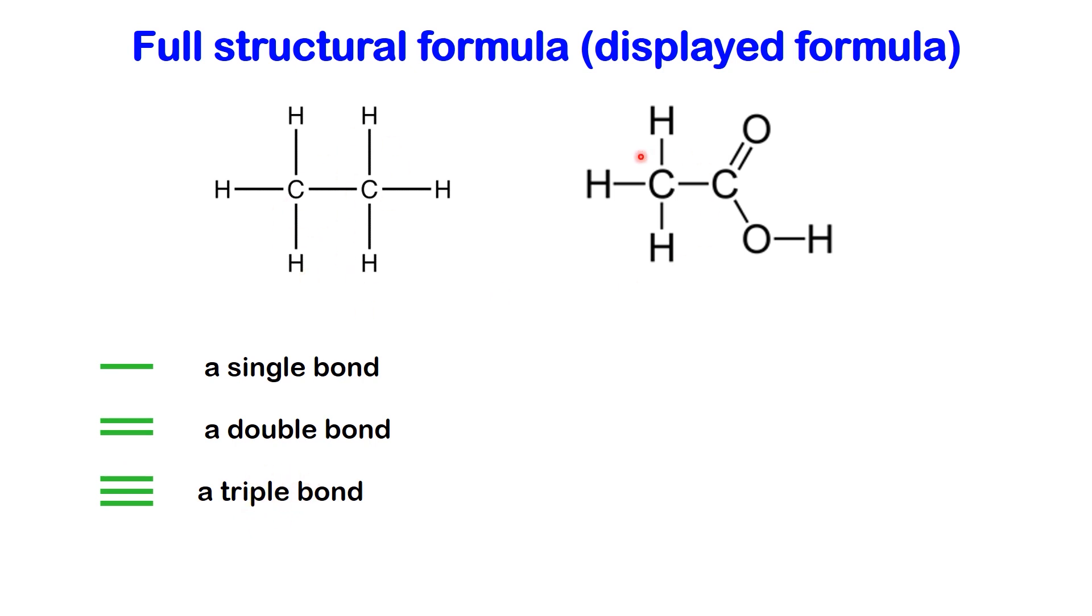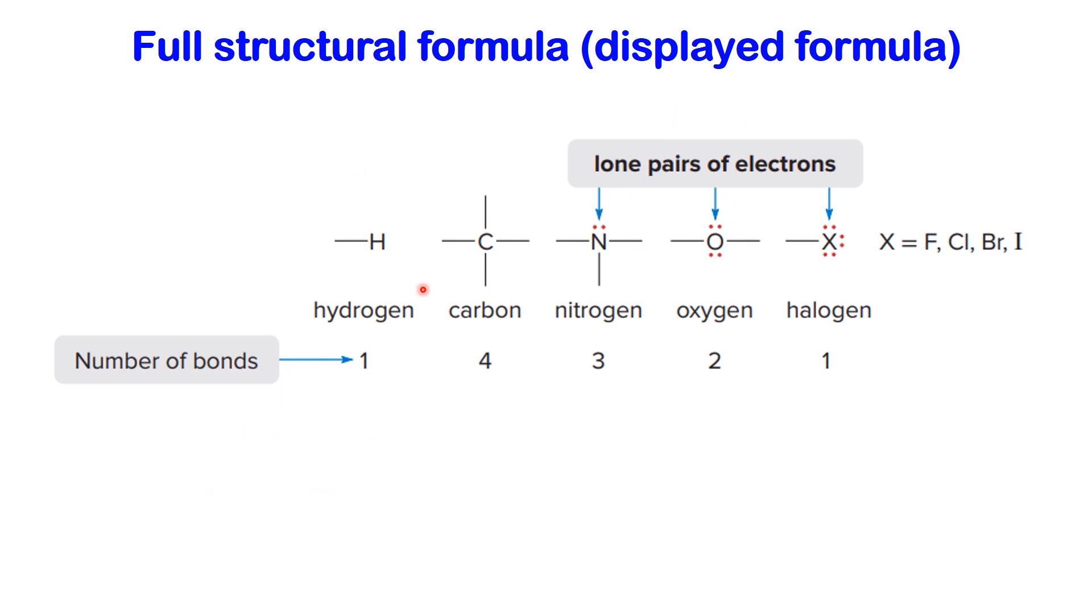To ensure we draw the structure accurately, it's important to know how many bonds each element can make. For example, carbon can form up to four bonds, oxygen up to two, hydrogen up to one, and so on. This understanding is essential for ensuring the correctness of the representation.